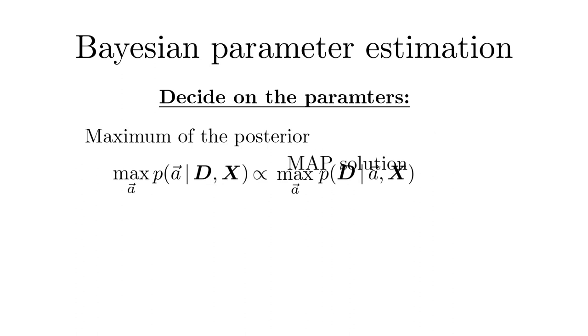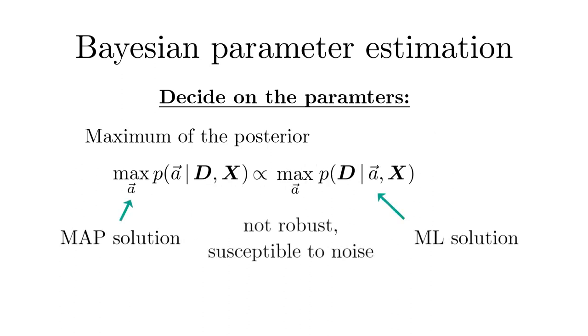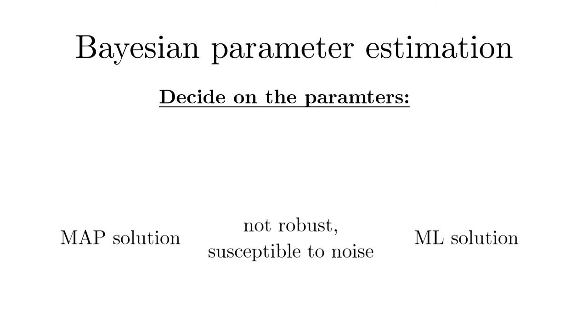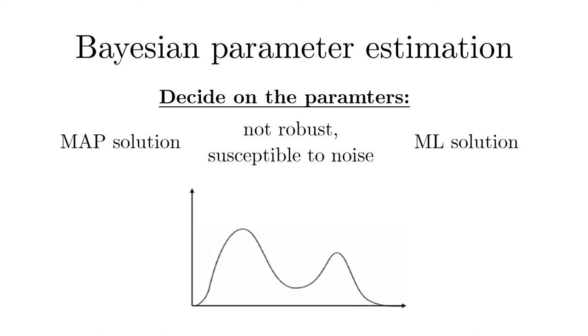In general, the MAP and hence the maximum likelihood solution is not very robust and highly susceptible to noise. In particular, if the likelihood is not unimodal, which means it has several peaks, the maximum can be misleading if it does not carry the dominant probability mass.